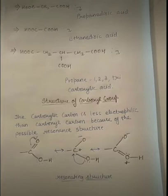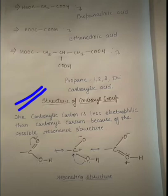Now let us talk about the structure of the carboxylic group. The carboxylic group is planar, and the bond angles form 120 degrees.